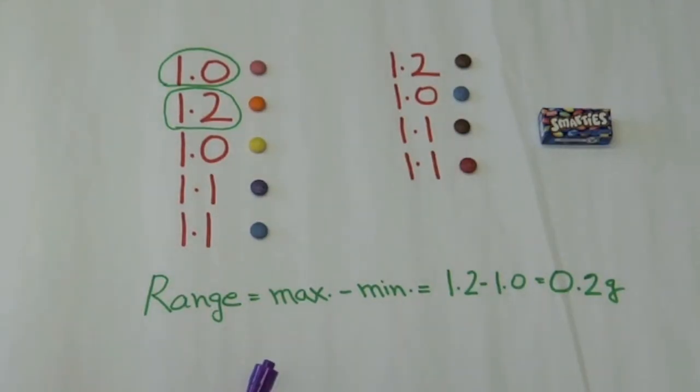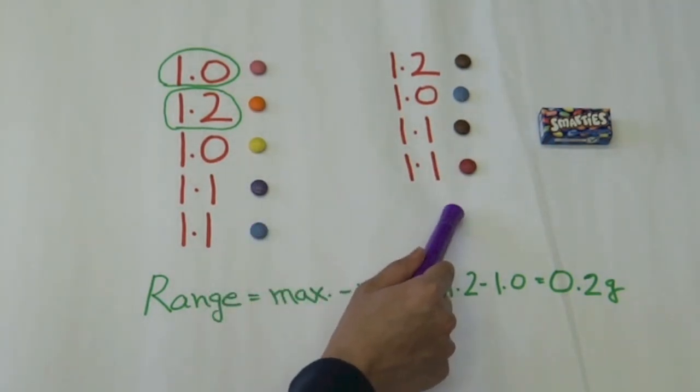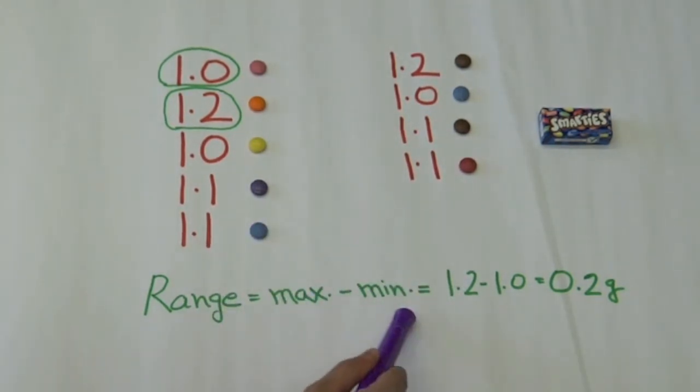Some measures of variability such as range can give false impressions. For example, in one of the previous videos I weighed these smarties and I found out the range in their weights.